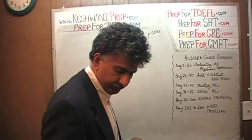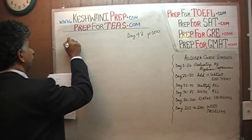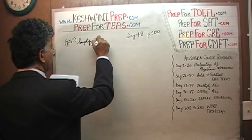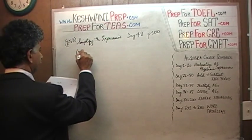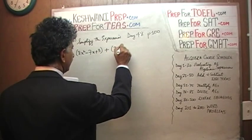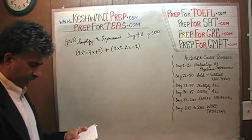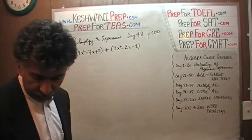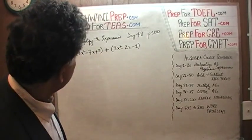On page 100 we have some algebra problems. The very first one, problem 2.52, says: simplify the expression 8x squared minus 7x plus 3, plus 3x squared minus 2x minus 1. First thing first, we have to open the parenthesis. Let me just make sure that I copied it correctly: 8x squared minus 7x plus 3, and then 3x squared minus 2x minus 1.